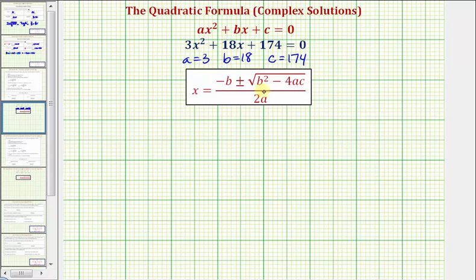Now we'll perform substitution into the quadratic formula. So we'll have x equals negative b, which is negative 18, plus or minus the square root of b squared, that would be 18 squared,